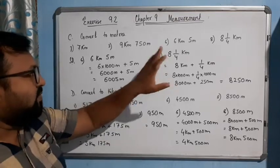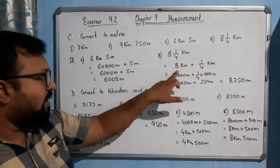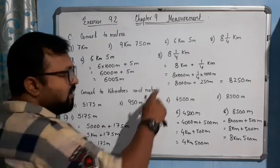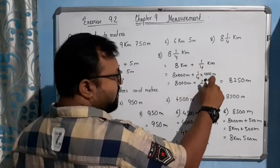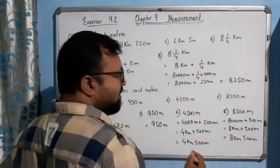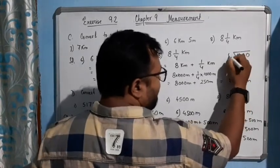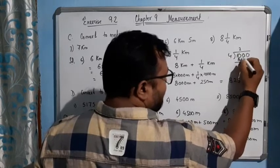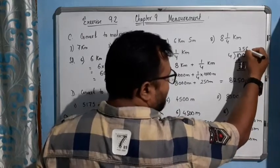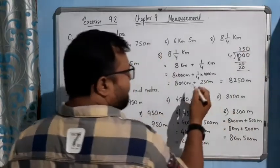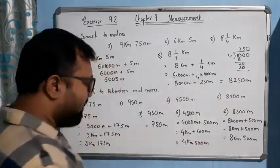Once again, for 8 and 1/4 kilometers: 8 kilometers equals 8000 meters, and 1/4 kilometer equals 1/4 into 1000 meters. Dividing 1000 by 4: 4 into 10 gives 2, bring down 0, 4 into 20 gives 5, remainder 0, so 250. Therefore 1/4 of 1000 is 250 meters, giving 8000 plus 250, which is 8250 meters.